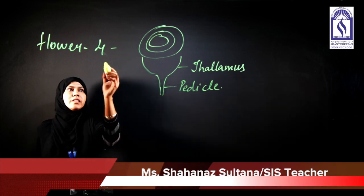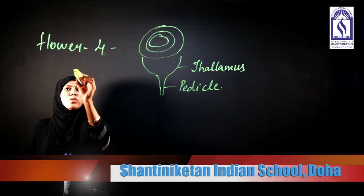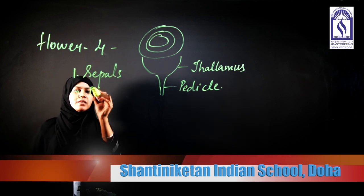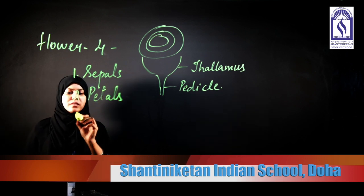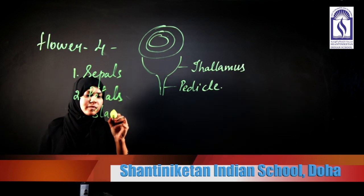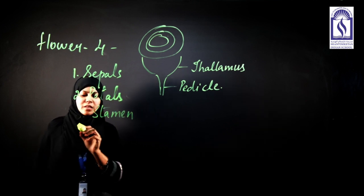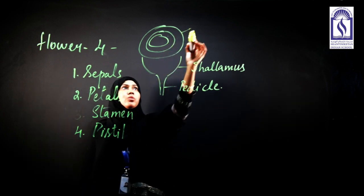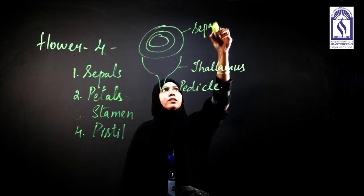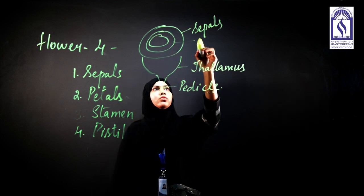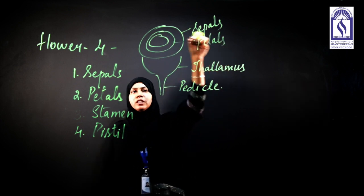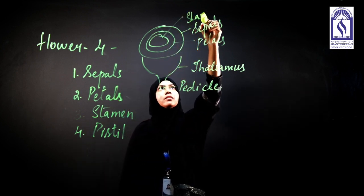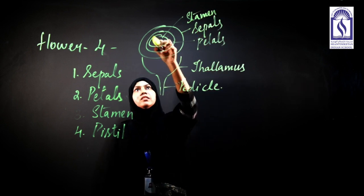The four parts arranged in rings are: first, sepals; second, petals; third, stamen; and fourth, pistil. The outermost whorl is of sepals. The second whorl consists of petals arranged in a circle, the third consists of the stamen, and in the center is the pistil.